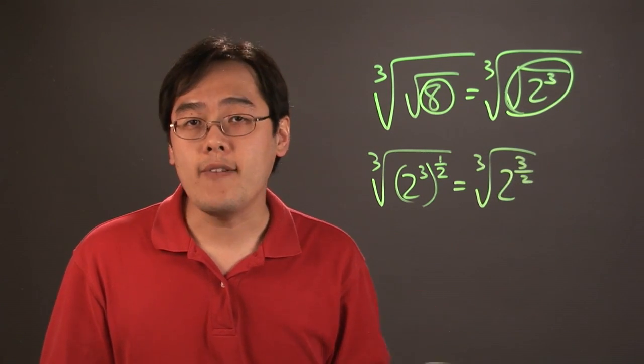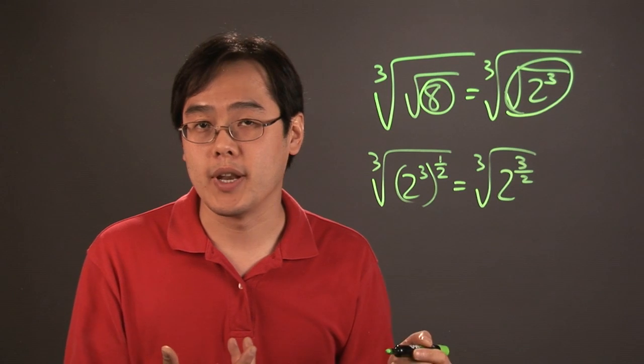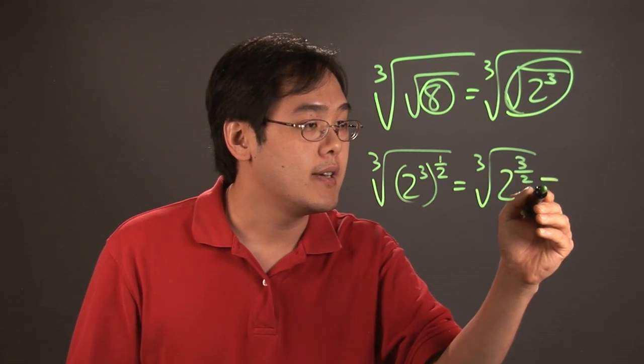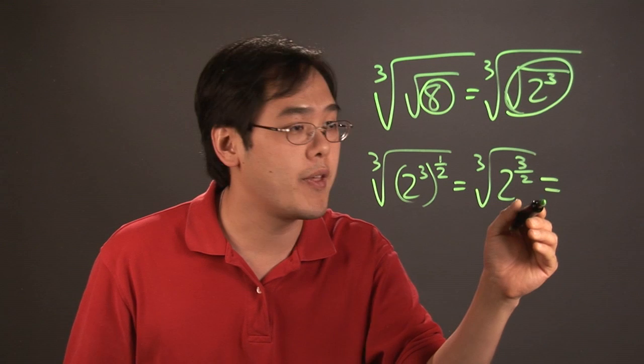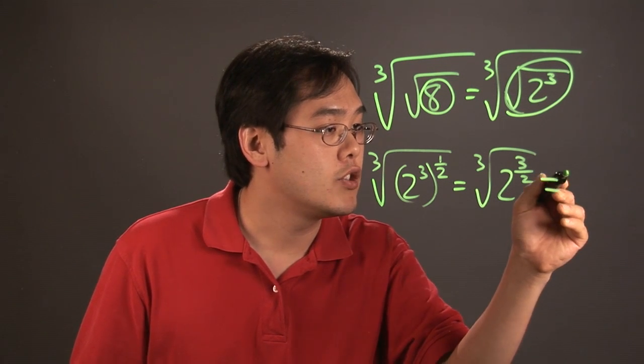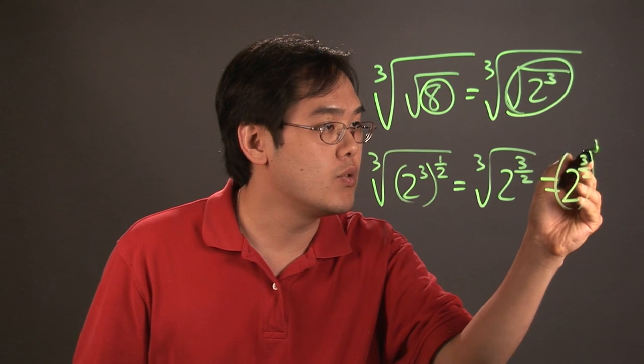Now after that you can rewrite the cube root as an exponent as well and if square roots can be thought of as to the one-half, cube root is thought of as to the one-third. So this would be 2 to the three halves to the one-third power.